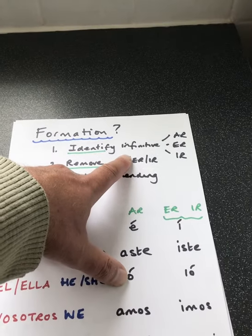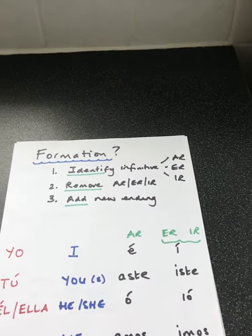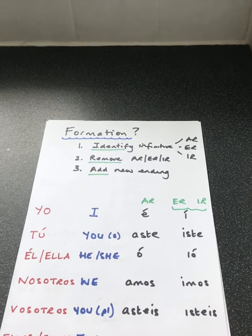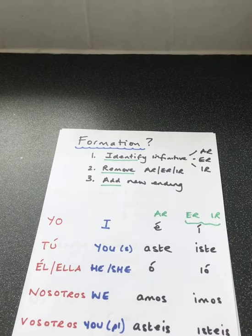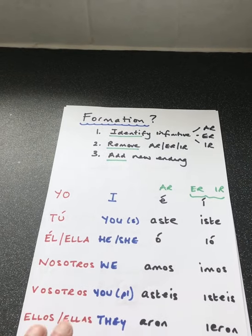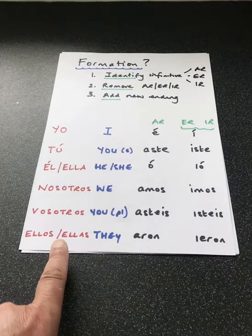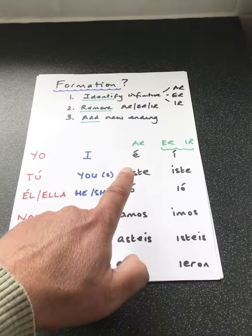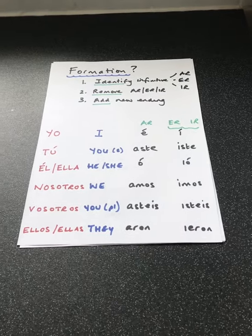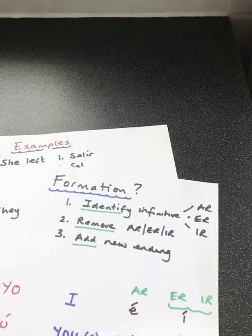Now remember, an infinitive in Spanish always ends in AR, ER, or IR. And the infinitive in English has the word 'to': to eat, to go, to drink, to sleep, etc. So your endings that I referred to in stage three are all down the bottom. You can see that I've given you endings for AR, and one set of endings for ER and IR. So actually you've only got to learn two sets of endings.